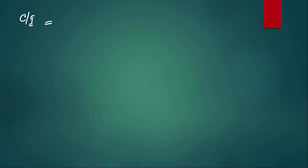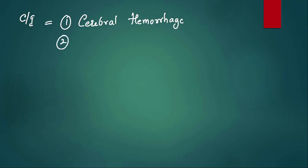Now, coming to contraindications of mannitol. Number one: it should not be given if there is cerebral hemorrhage — if there is bleeding, don't give it, it will worsen that. Second, it is contraindicated in anuria — if the kidney has already failed with no urine output, don't give it. Third, it should not be given in left ventricular failure or acute pulmonary edema.